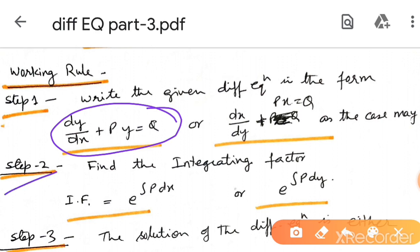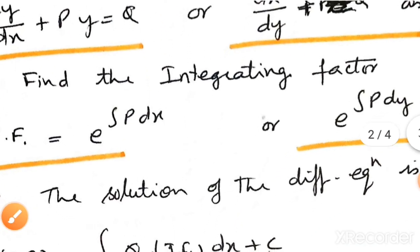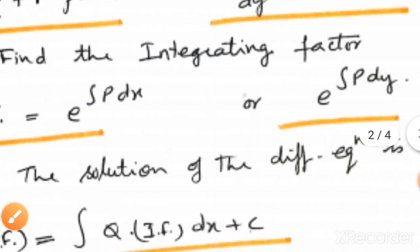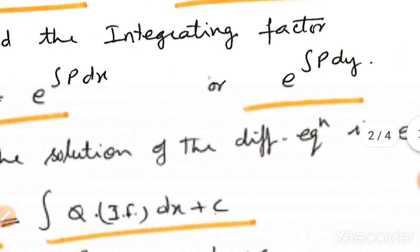Step 2: We find the integrating factor. IF is generally e to the power p dx, and in the second case e to the power p dy.